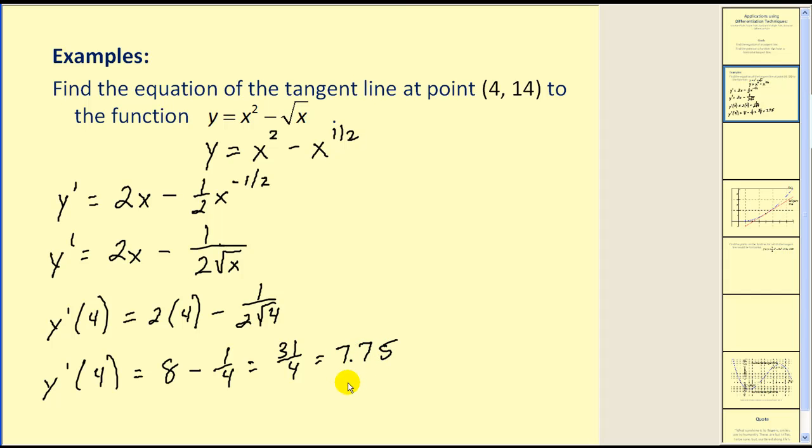Now this will be the slope of our tangent line. So now we need to find the equation of the tangent line, and we use point-slope form. Just in case you don't remember that, here it is. Our slope is here, our point is here. This would give us y minus 14 is equal to 7.75 times the quantity x minus 4.